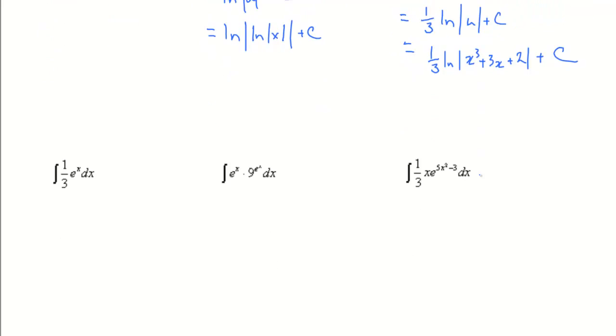In the next examples, we're going to look at integrals with e. In this case, we'll start by removing the constant. E is that special function where the derivative of e is e, or e to the x is e to the x, which means if we take the integral, we keep it. The integral of e to the x is e to the x. We add a constant, and that's the final answer.